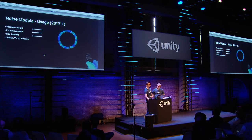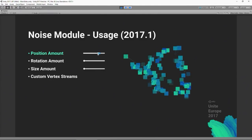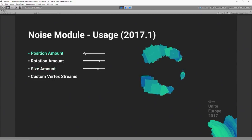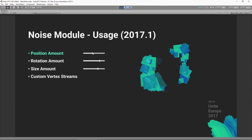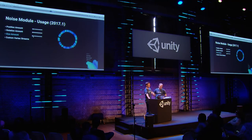In 2017.1 the noise module is even more flexible. Previously we just moved particles using noise, but now three new sliders let you apply noise to positions, rotations, and sizes independently or in combination. We've also added new custom vertex streams that let you send noise data to your shaders — useful for things like scrolling UVs in a noisy pattern.